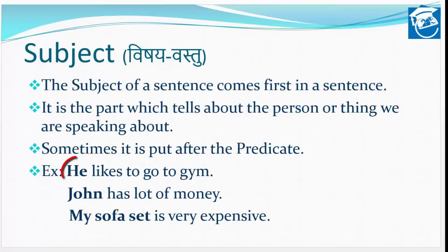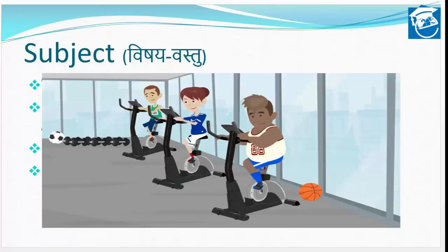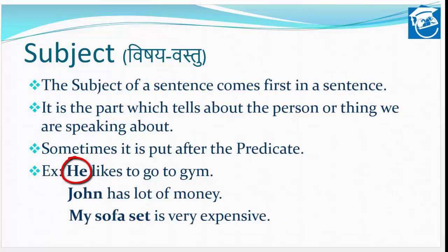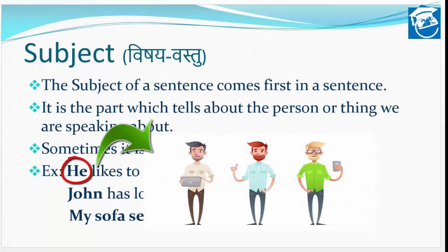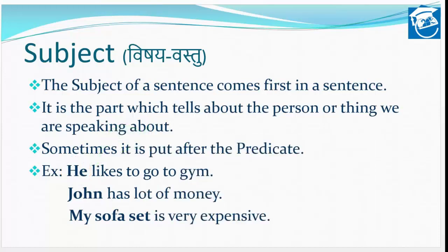He likes to go to gym — use gym jaana pasand hai. Yahaan 'he' jiske baare mein yeh sentence bataya ja raha hai, ki us vyakti ko — jo yahaan ek purush hai — gym jaana pasand hai. So 'he likes to go to gym' mein 'he' jo hai woh humara subject ban jata hai.